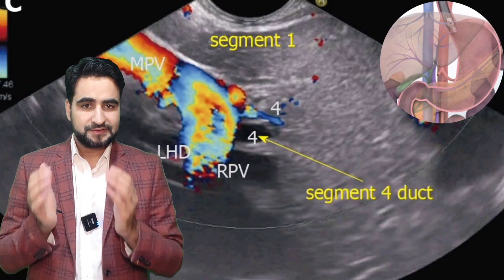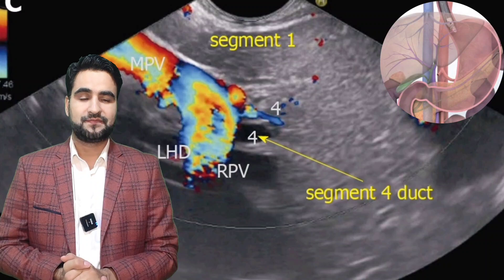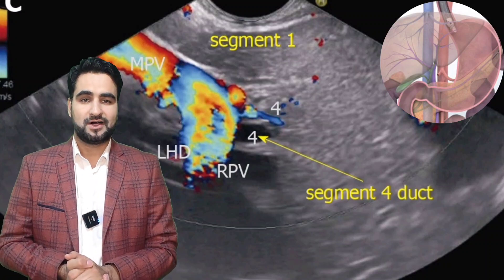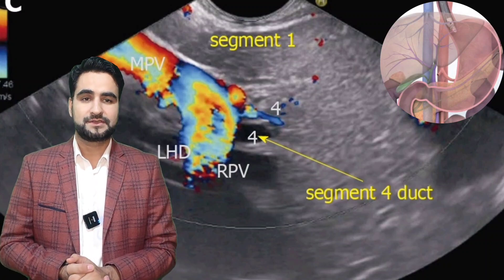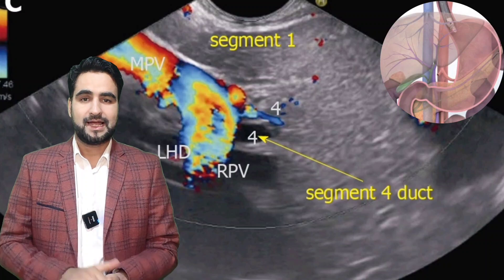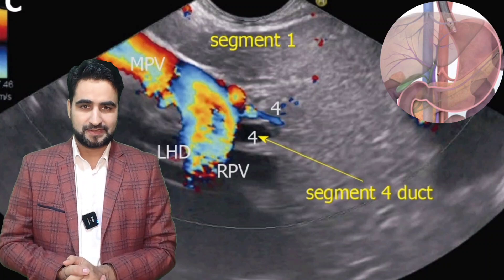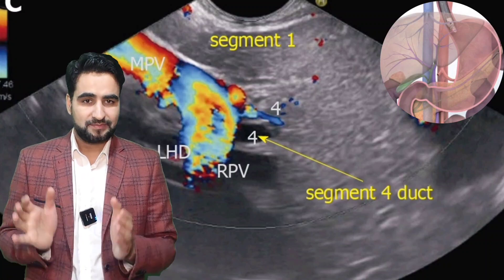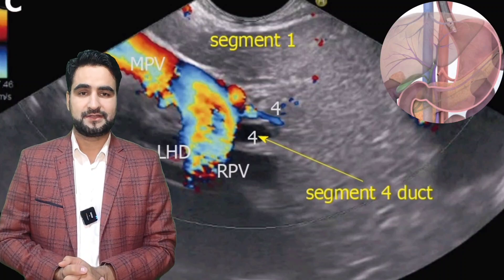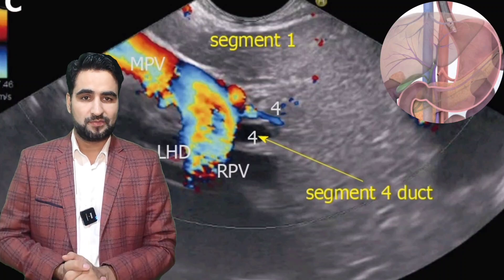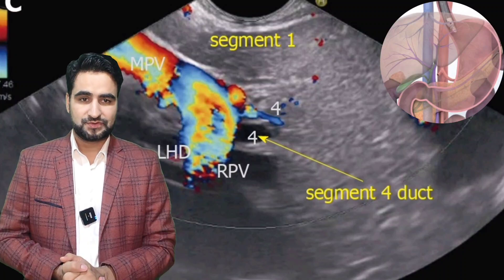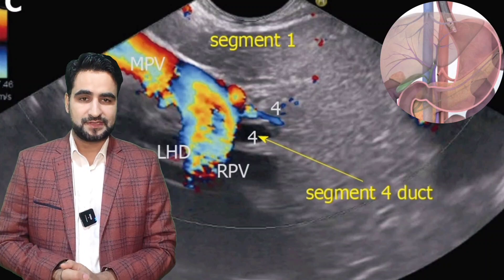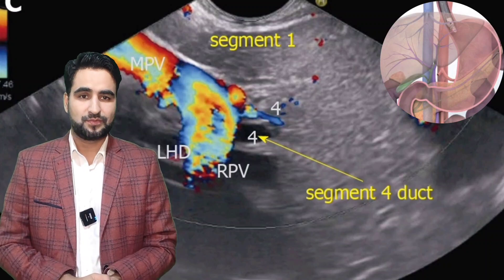In front of this transverse left portal vein, the fused ducts of segment 2 and 3 are now joined by the segment 4 duct, entering from the cranial aspect. At this stage, we have assembled the full left hepatic ductal confluence — the union of segments 2, 3, and 4 ducts — lying just anterior to the transverse left portal vein.